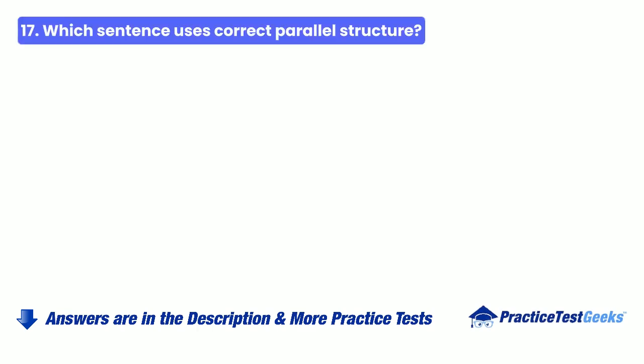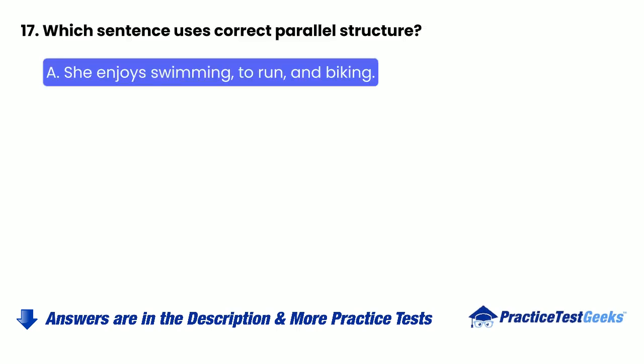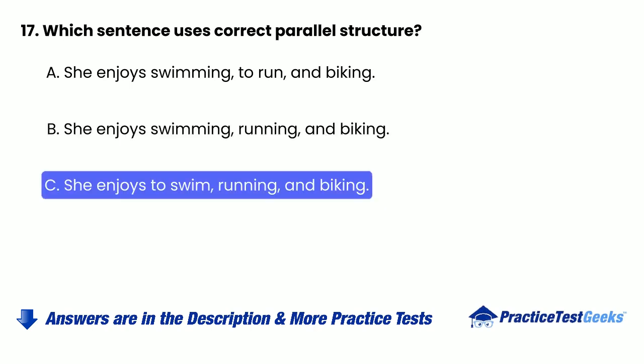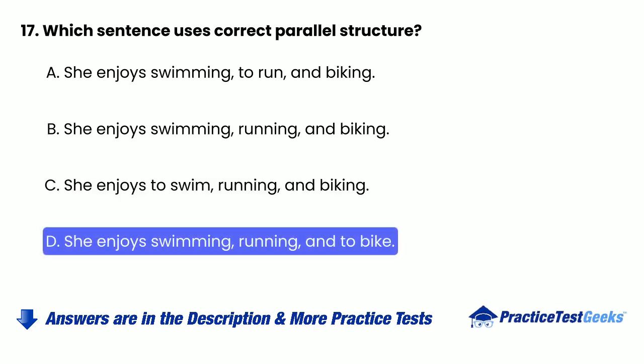Question 17: Which sentence uses correct parallel structure? A. She enjoys swimming, to run, and biking. B. She enjoys swimming, running, and biking. C. She enjoys to swim, running, and biking. D. She enjoys swimming, running, and to bike.